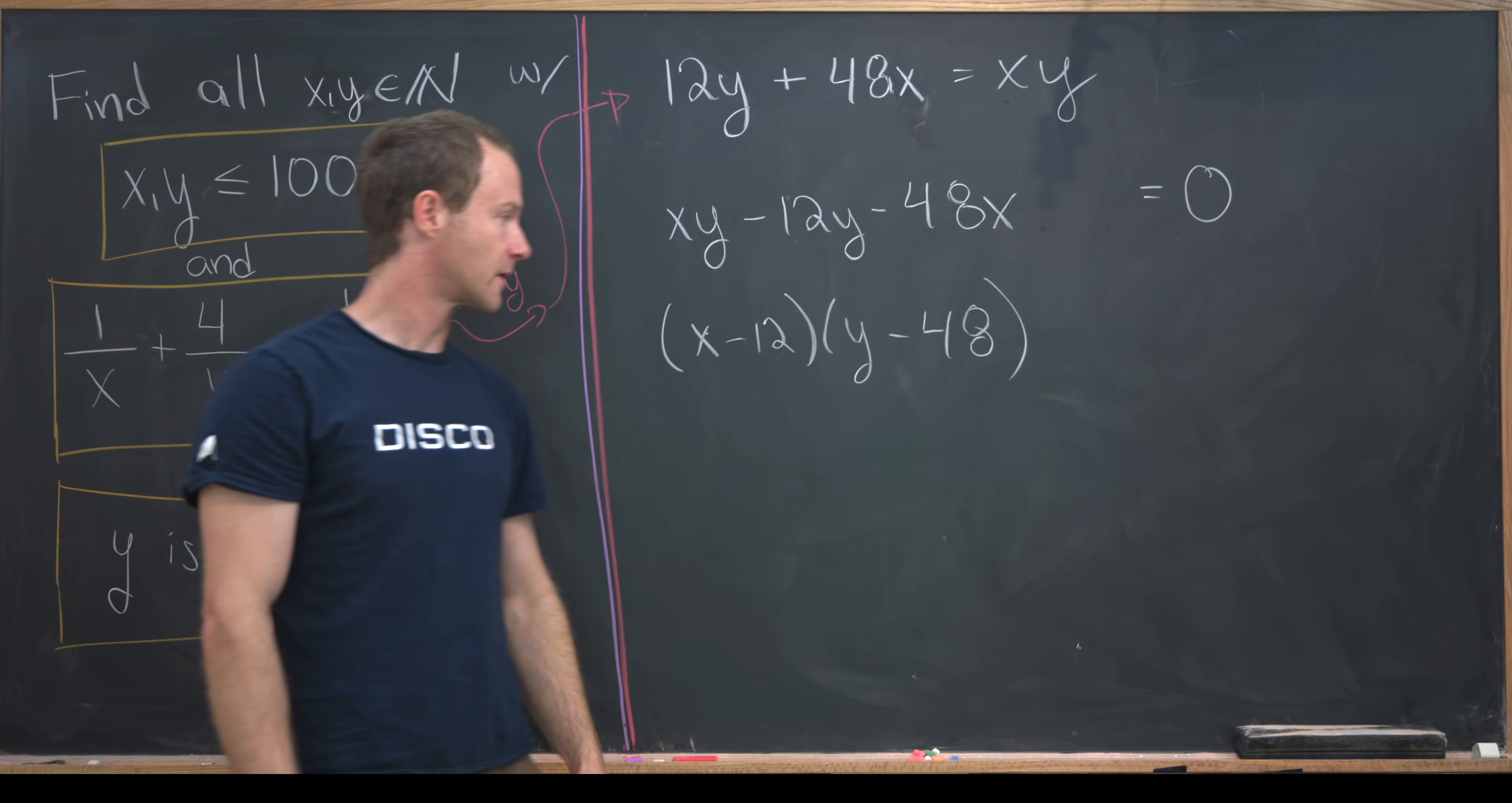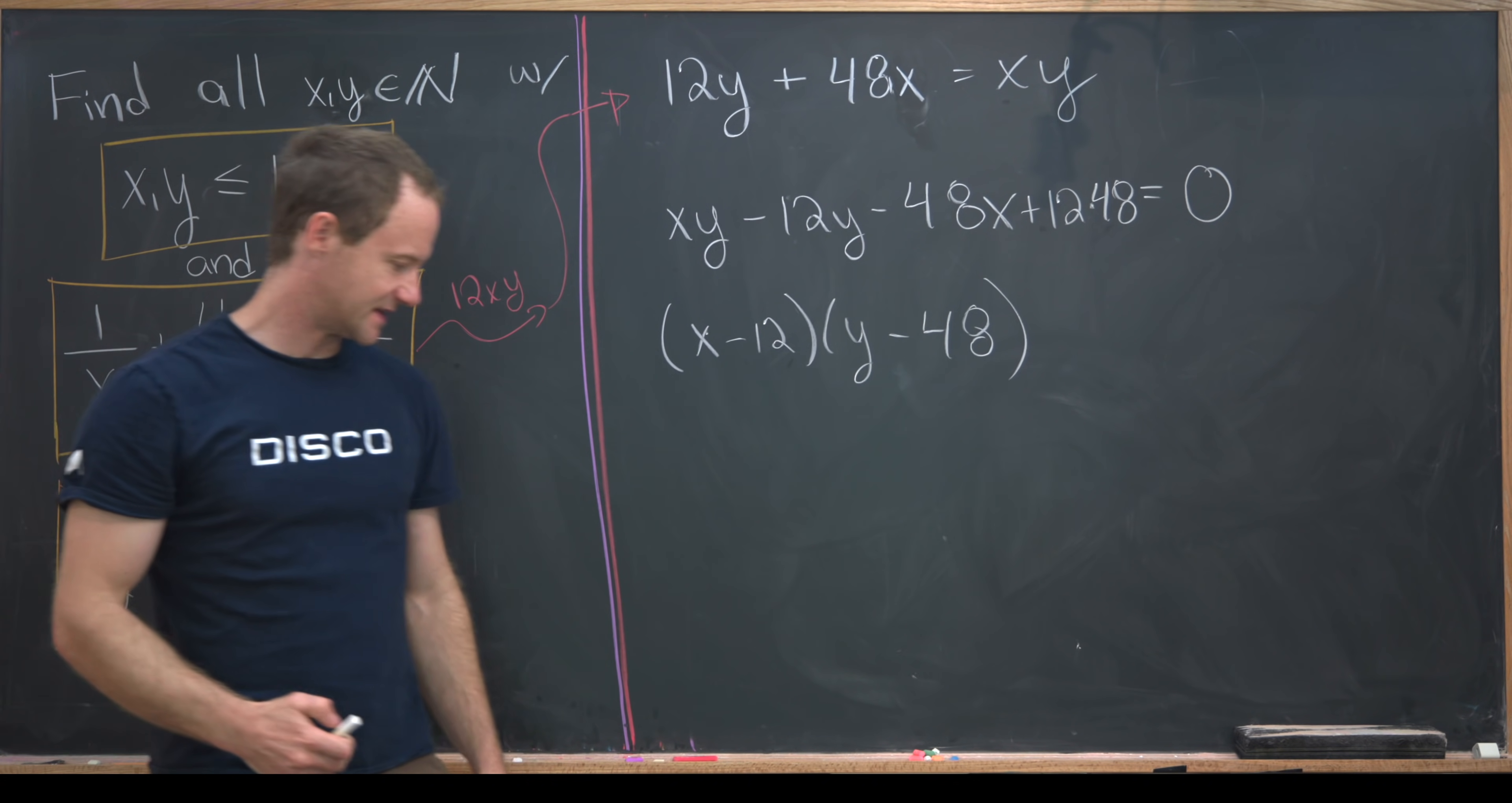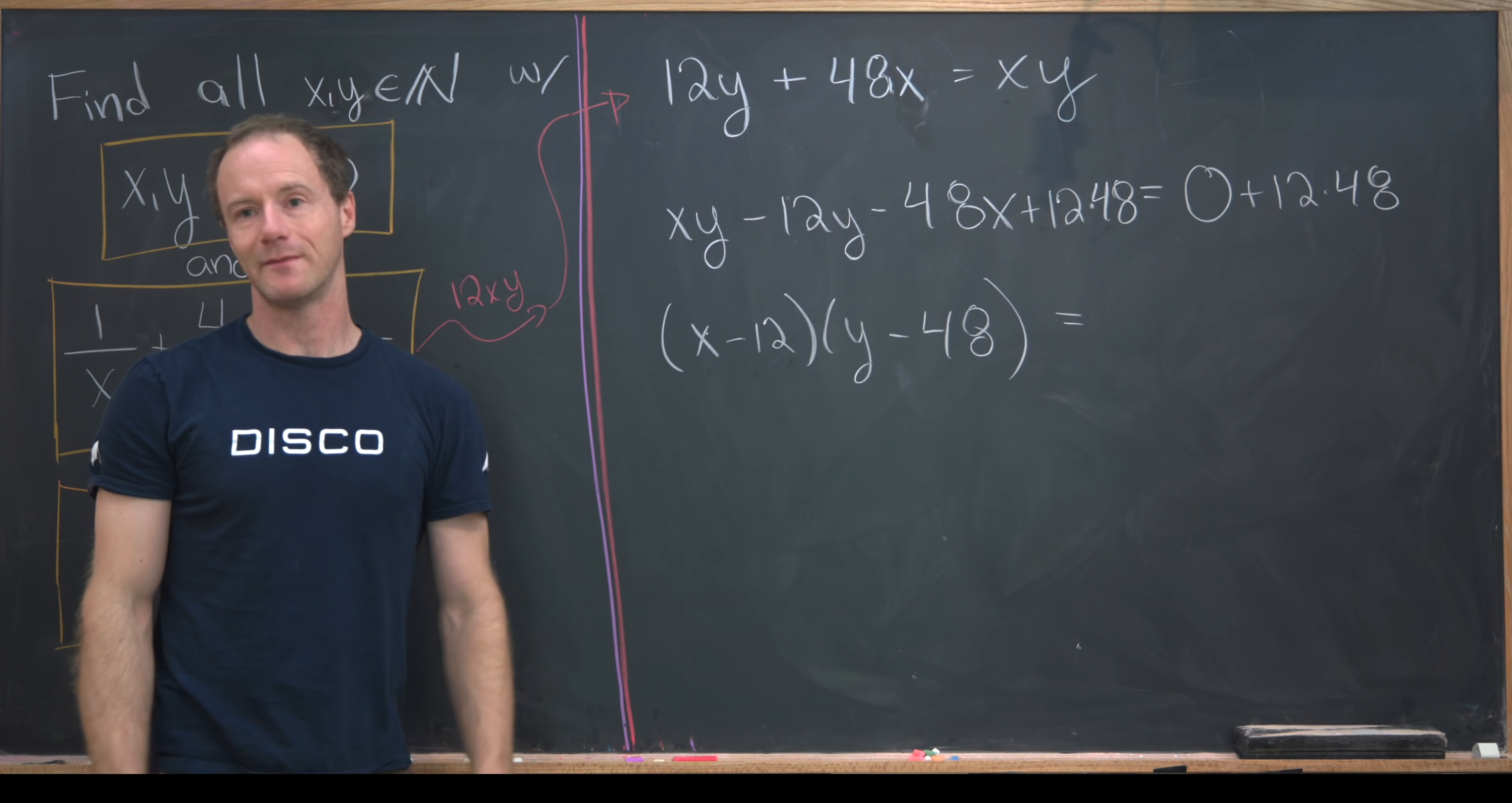But what are we lacking over here? We're lacking this negative 12 times negative 48, which would just be positive 12 times 48. If we added that to the left-hand side, we also have to add it to the right-hand side so that we don't change anything. So now we've got this factorization: x minus 12 times y minus 48 equals 12 times 48.